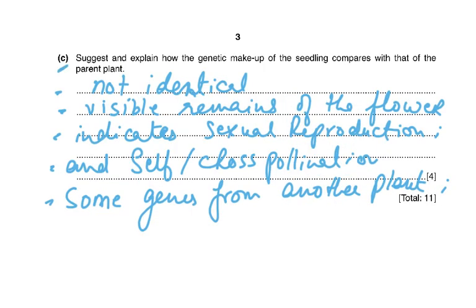Coming to part C: suggest and explain how the genetic makeup of the seedling compares with that of the parent plant. The seedling is not identical to the parent because pollen might have come from another flower — for example, from a white rose onto a red rose. But remember: pollen is always specific to a species. Pollen from a rose cannot land on a lily and germinate — there are receptors on every stigma and only its own species' pollen will stick. So some genes have come from another plant.